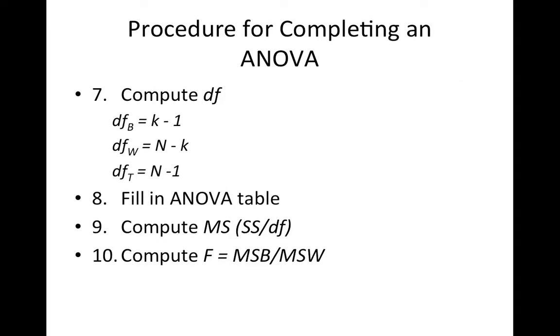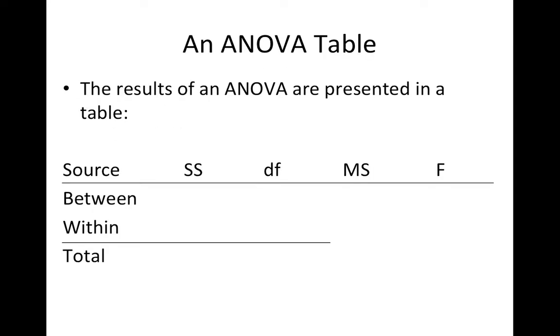We compute the appropriate degrees of freedom, we fill in an ANOVA table, we compute mean square, and compute F. So this is what an ANOVA table looks like blank. So what we're going to do is we're going to compute sum of squares between, sum of squares within, sum of squares total. We're going to compute degrees of freedom between, degrees of freedom within, degrees of freedom total. Then mean square just comes from sum of squares divided by degrees of freedom equals mean square. Sum of squares divided by degrees of freedom equals mean square.